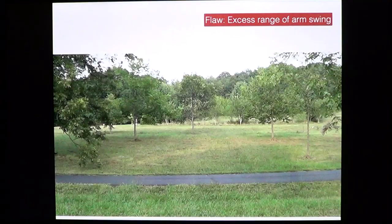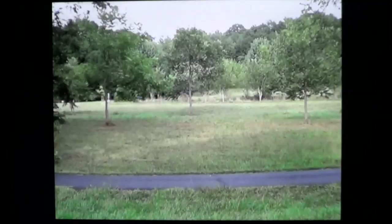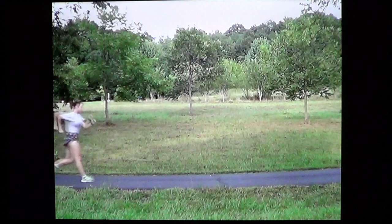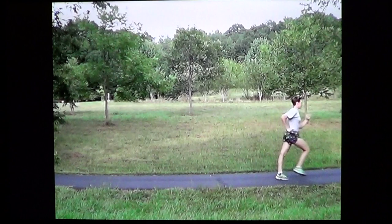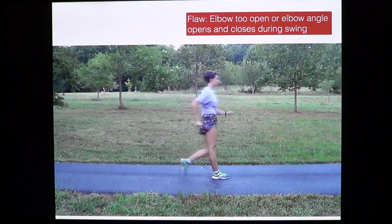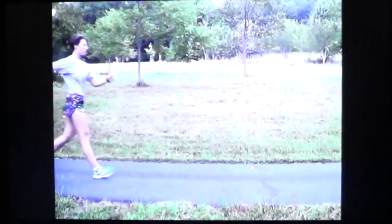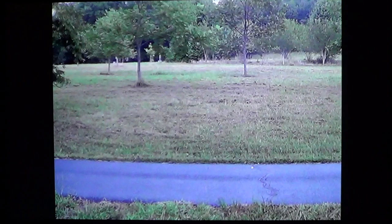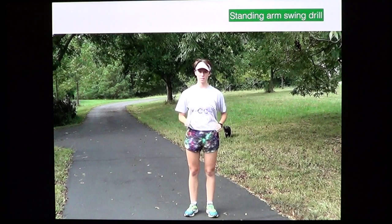Here we see an athlete with excessive range of motion in their arms — the hand is swinging up into eye level in front and the elbow is coming up to their ear behind. Another problem is arm swing crossing the body, sometimes called Popeye arms, swinging to the opposite shoulder. Here we see an excessively open elbow angle — the angle at the elbow should be 90 degrees or more acute. Here it's too far open, producing a long pendulum and a slow arm swing, and the hand comes down below the shorts.